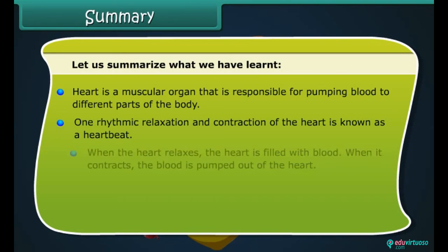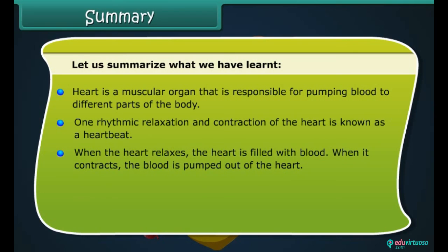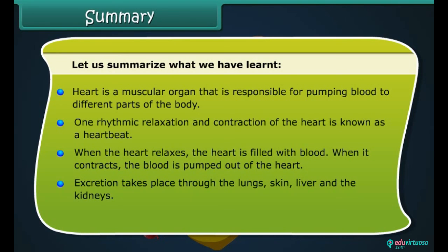When the heart relaxes, it is filled with blood; when it contracts, the blood is pumped out of the heart. Excretion takes place through the lungs, skin, liver, and kidneys. Kidneys filter the blood and remove waste as urine.